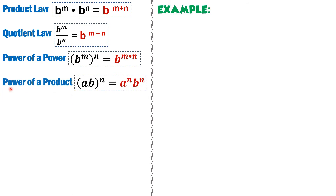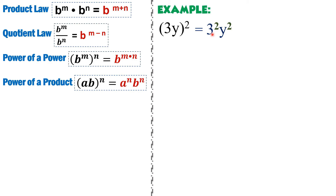For power of a product, if two factors are raised to a single exponent, you distribute that exponent to each variable, giving a raised to n and b raised to n. For example, we have 3y raised to 2. Since 3y is inside the parentheses, both must be raised to 2. So 3 gets the exponent 2 and y also gets the exponent 2. 3 squared equals 3 times 3, which is 9. So the answer is 9y squared.